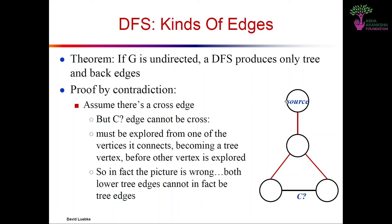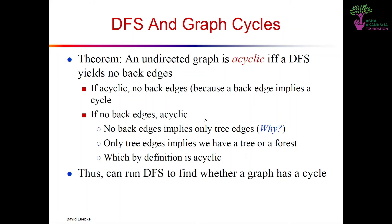Finally there is the cross edge — an edge between different trees or subtrees, also from a gray node to a black node. In the example, the blue arrows are cross edges. From node 5 we checked node 3, which was already black, but node 3 was not an ancestor of node 5 — its parent was node 2, and you cannot go directly from 3 to 5. Similarly, we cannot go from 5 to 9, making these cross edges.